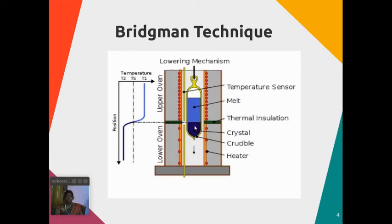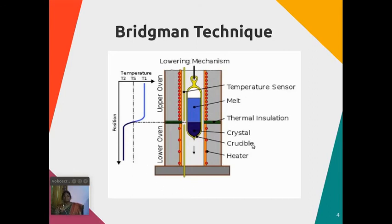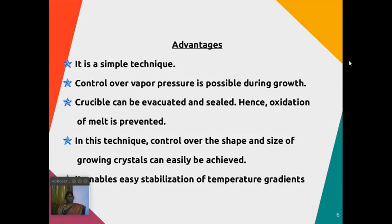From this point, the process of crystallization begins. As the crucible slowly moves down, crystallization starts from the tip and the crystal grows progressively until the entire melt in the crucible becomes solid while moving from the high temperature zone to the low temperature zone. In this way, the Bridgman technique produces crystallized material.